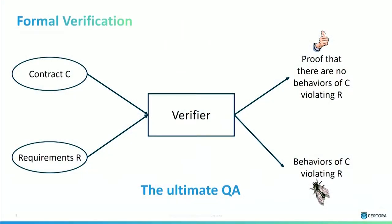So what is formal verification? Formal verification is a technology which accepts two inputs: the contract on one hand, and the requirement on the other hand. Formal verification can do two things for you. One thing is to produce a proof that the code is correct. But equally interesting, it can reveal subtle bugs of your system, and produce a concrete execution that demonstrates the bugs.